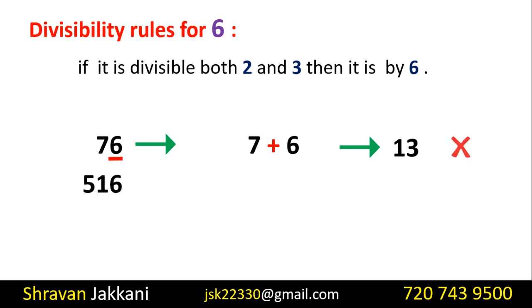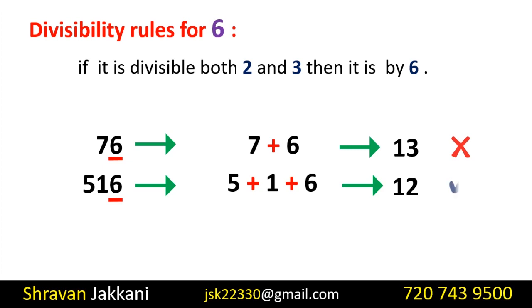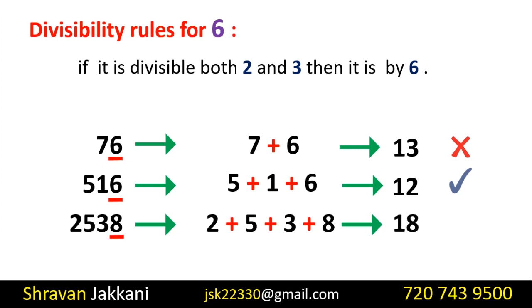Next, consider 516. The ones place is 6, which is even, so it satisfies the rule of 2. If we add the digits — 5 plus 1 plus 6 — we get 12. Since 12 is divisible by 3, the rule of 3 is also satisfied. Since 516 is divisible by both 2 and 3, it is divisible by 6. So the ones place must be even and the digit sum must be divisible by 3 for a number to be divisible by 6.